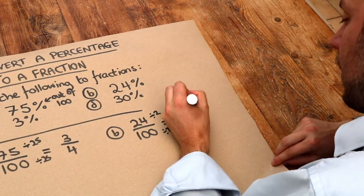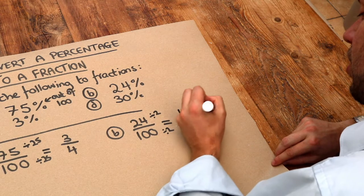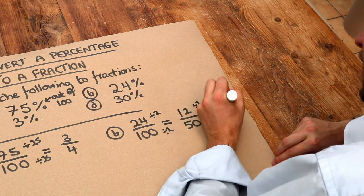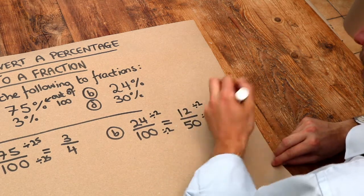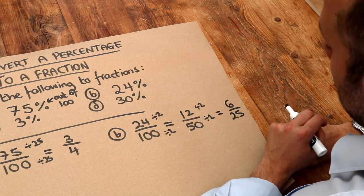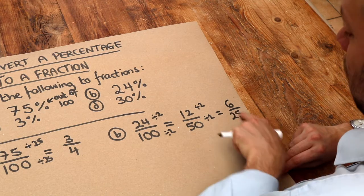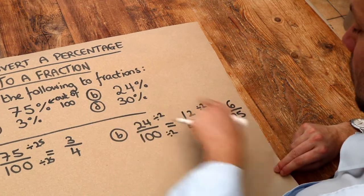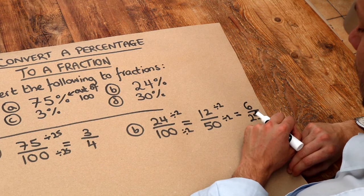12 and 50, again both even, so you can divide them both by 2 to get 6 over 25. Now 6 and 25, there's nothing we can divide them both by except for 1. Therefore, that is 24% as a fraction in its simplest form.